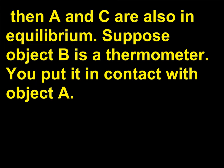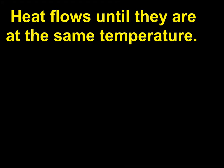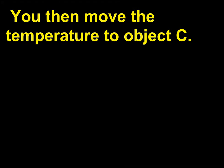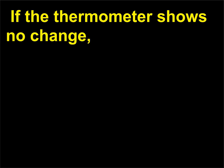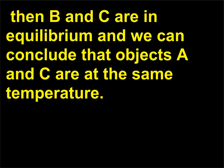Suppose object B is a thermometer. You put it in contact with object A; heat flows until they are at the same temperature. You then move the thermometer to object C. If the thermometer shows no change, then B and C are in equilibrium and we can conclude that objects A and C are at the same temperature.